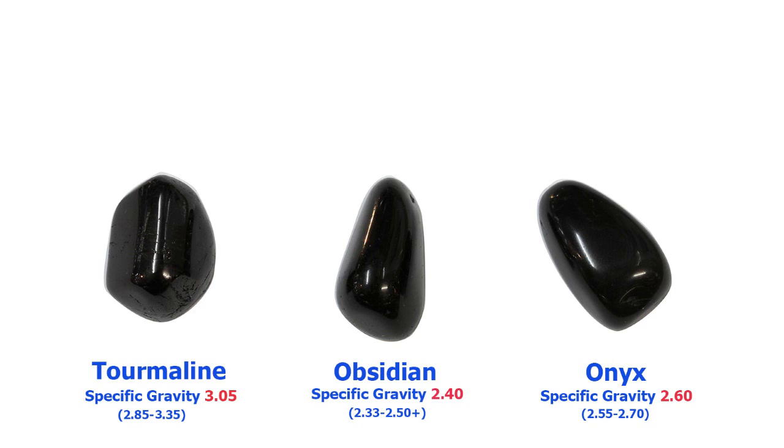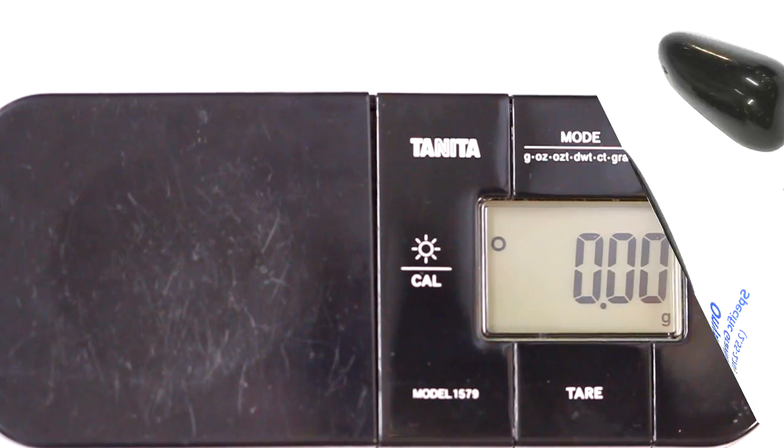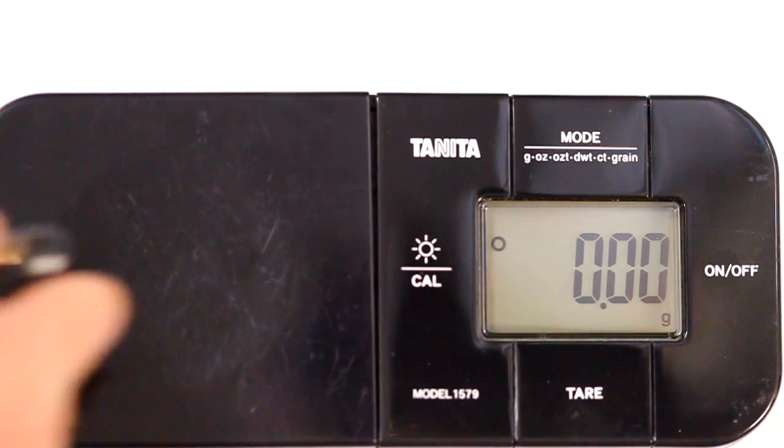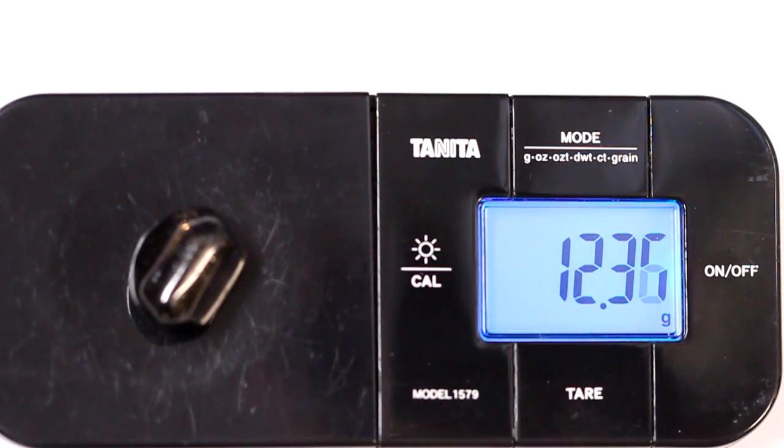So find out what the specific gravity range is supposed to be for your samples and write those figures down. What specific gravity actually is is a comparison between the weight of something and its volume—that is its density. With minerals, this is calculated by comparing the weight of the stone and then dividing it by the weight that water would be if it took up exactly the same space.